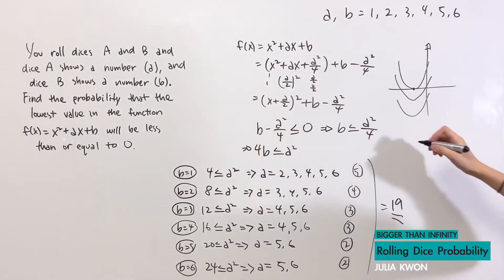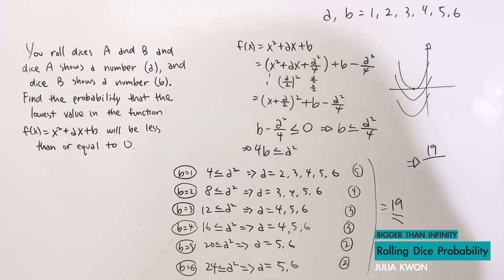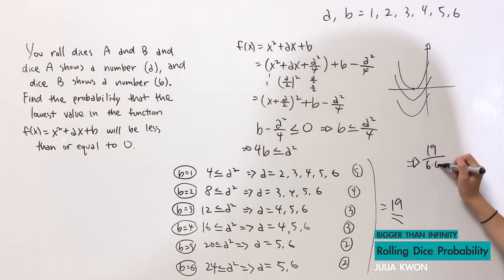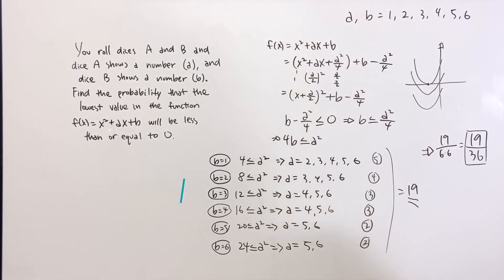And that means that for our final answer, we get 19 divided by, since it's asking for probability, the number of ways you can roll 2 dice, which would be 6 times 6, which is equal to 19 over 36. So that would be the answer for this question.